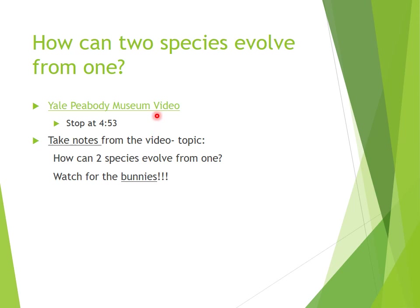To get to that answer, pause this video. The next link on the Schoology work for this week has a Yale Peabody Museum video. The first two or three minutes give general background on evolution, but the last two minutes or so actually give you the answer to this question: how do you get a branch in a family tree? How do two species evolve from one? They start answering the question when they show you the cartoon bunnies. Take notes on the video's explanation, then come back.